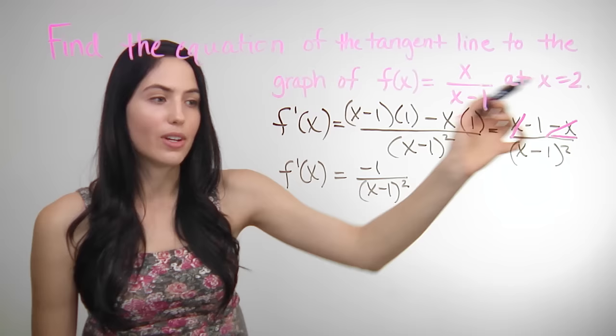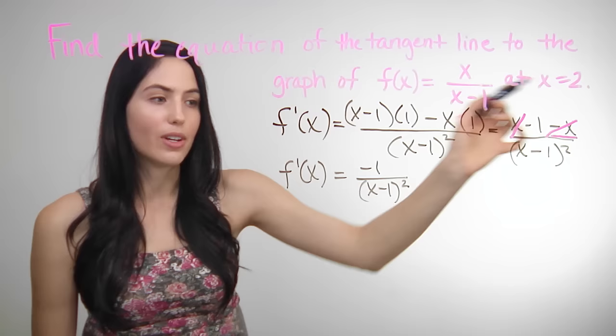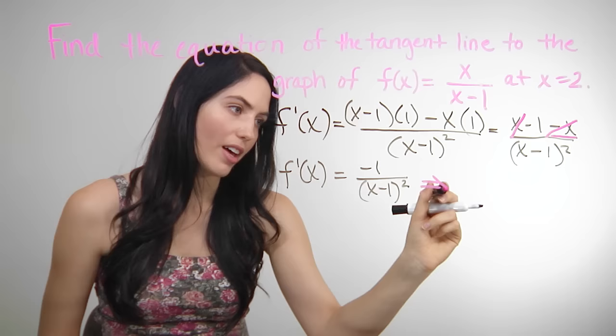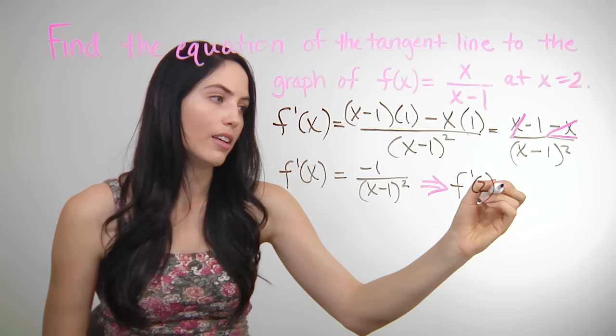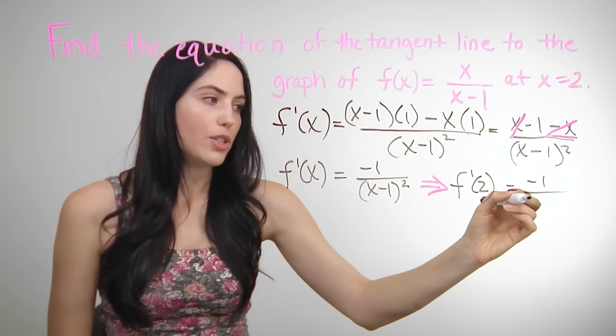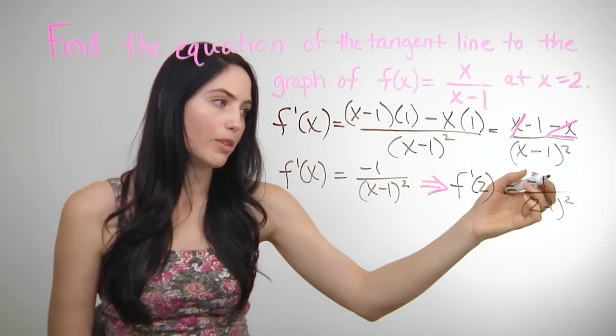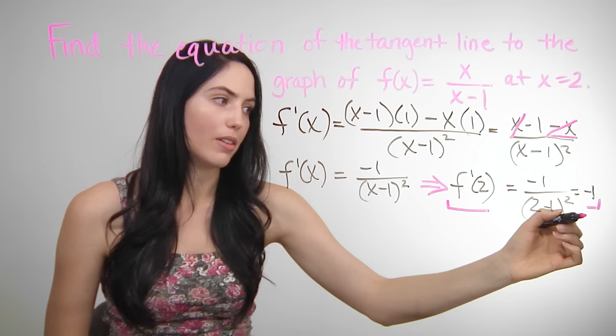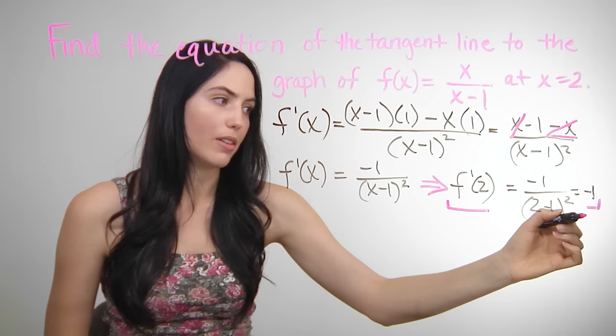Second step: plug in your x value into the derivative f prime of x. You can call that f prime of 2 because you're plugging in 2. That means negative 1 on top and 2 minus 1 squared on the bottom. This simplifies to negative 1 over 1 squared, which is just negative 1. So your slope value, your m, is negative 1.